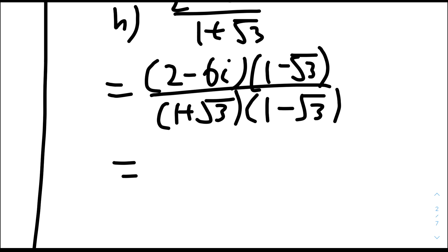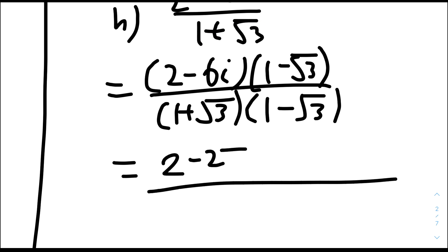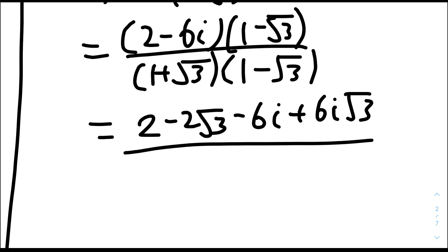So: 2 times 1 is 2; 2 times minus root 3 is minus 2 root 3; minus 6i times 1 is minus 6i; and minus 6i times minus root 3 gives plus 6i root 3. For the bottom, (1 plus root 3)(1 minus root 3) is a difference of two squares, which equals 1 minus 3, which is minus 2.